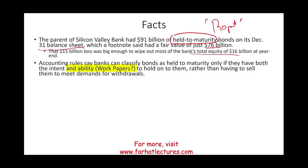Accounting rules state that bonds can only be classified as held to maturity if the company has both the intent and the ability to hold them. Silicon Valley Bank had them as held to maturity, meaning they had the intent. But the question is about their ability — did they know whether they would need to sell them in the near future?